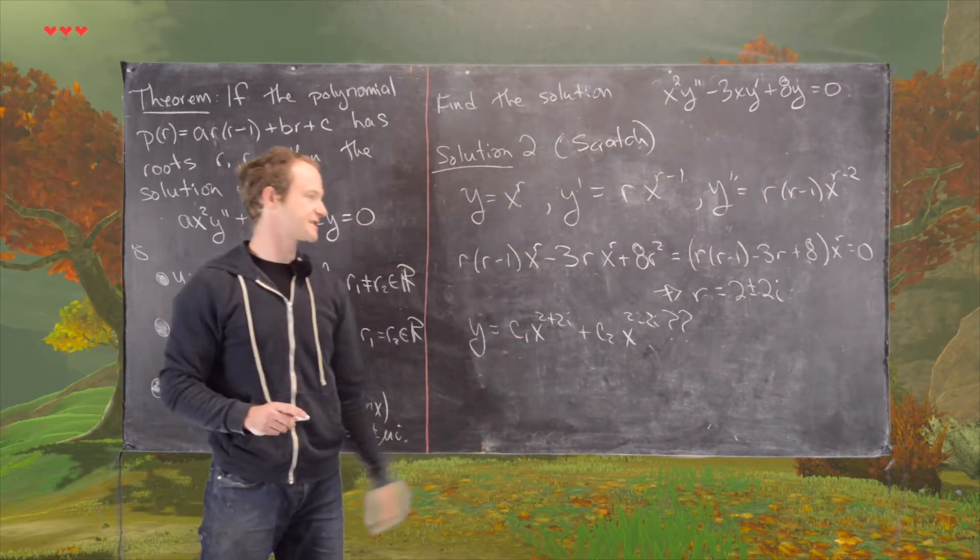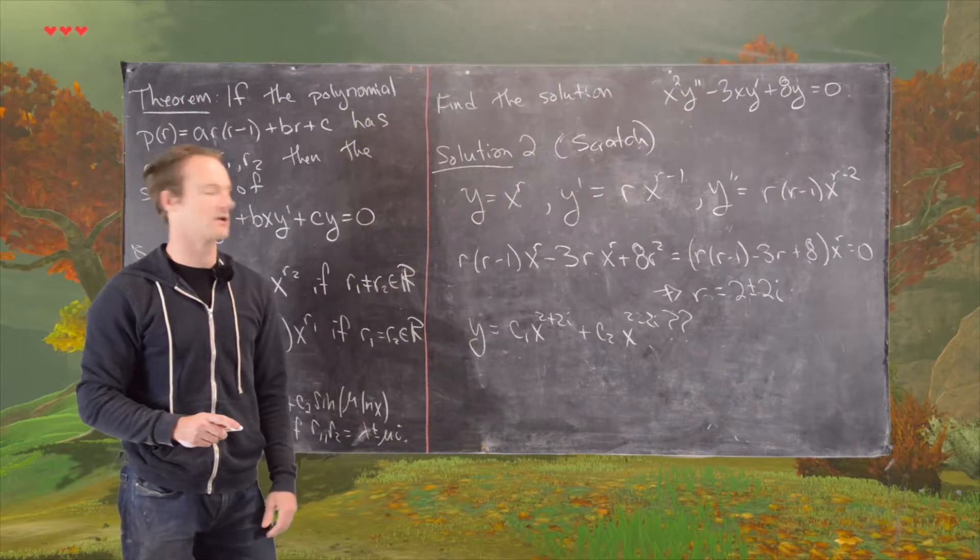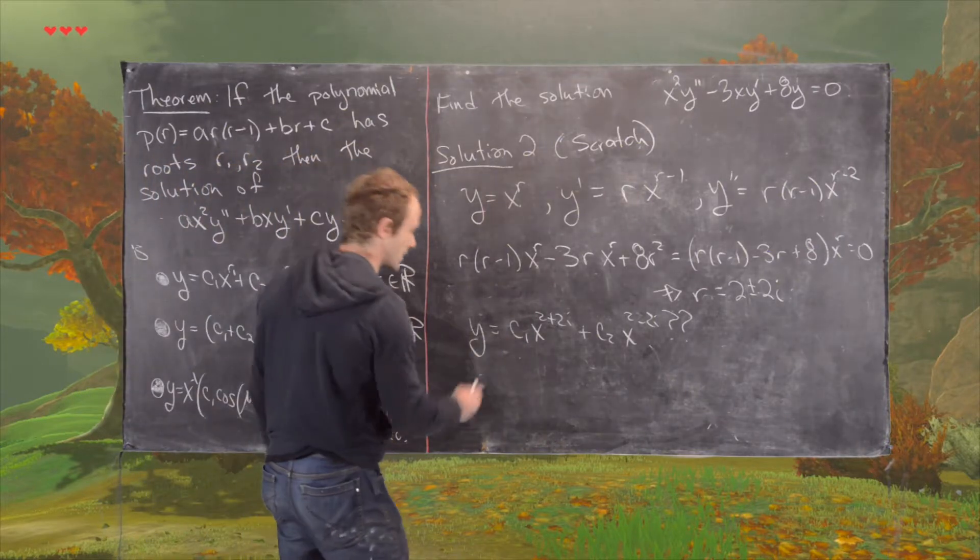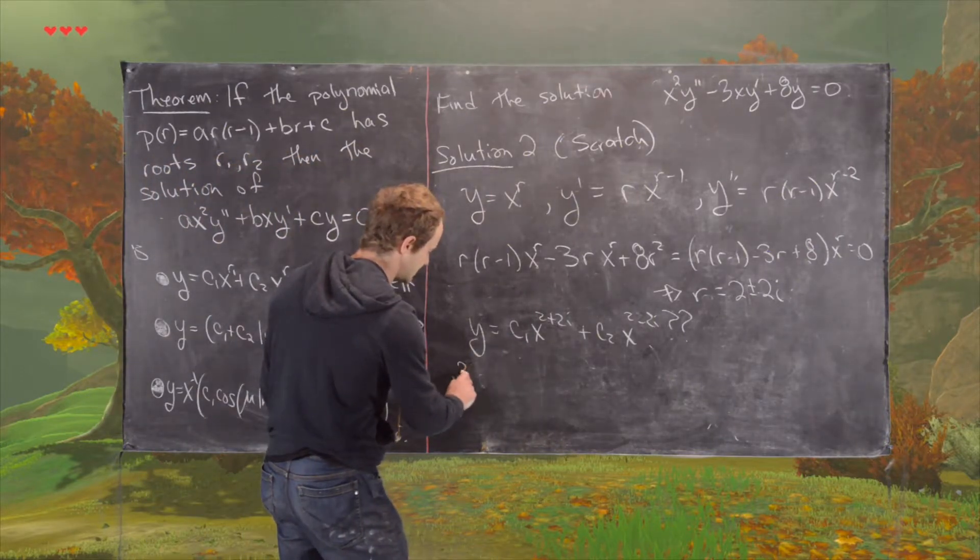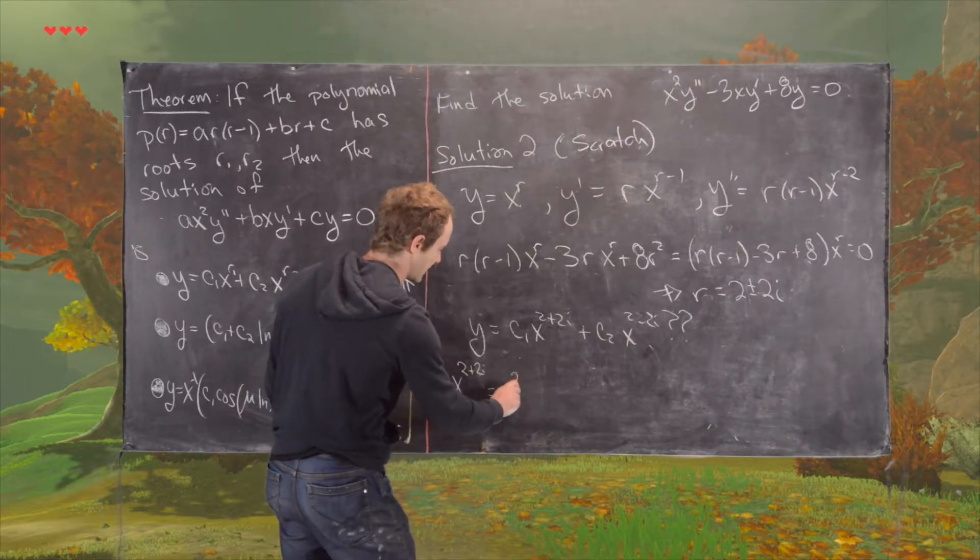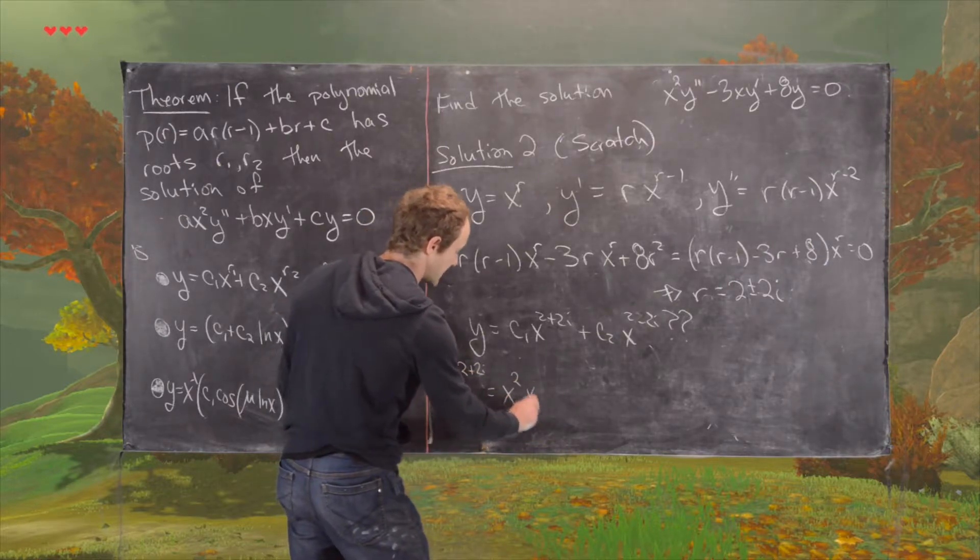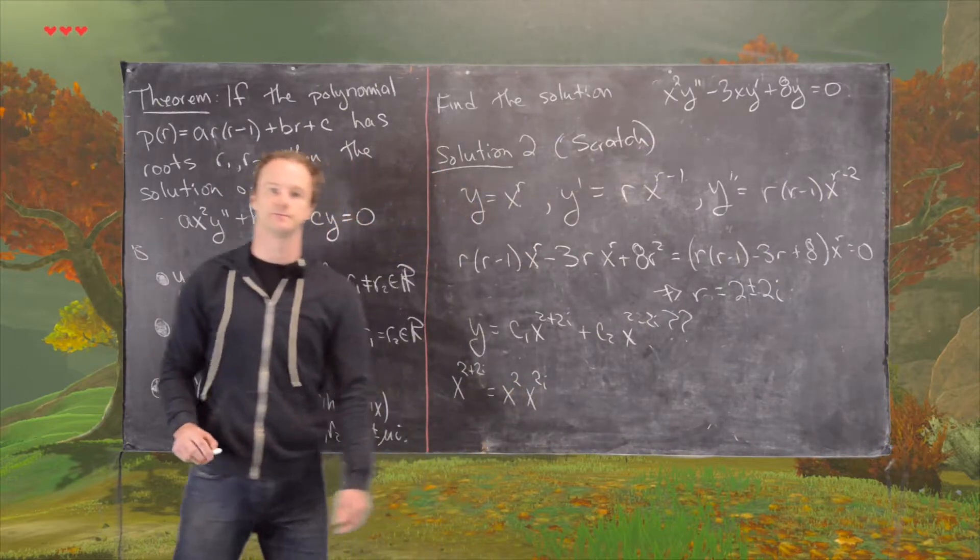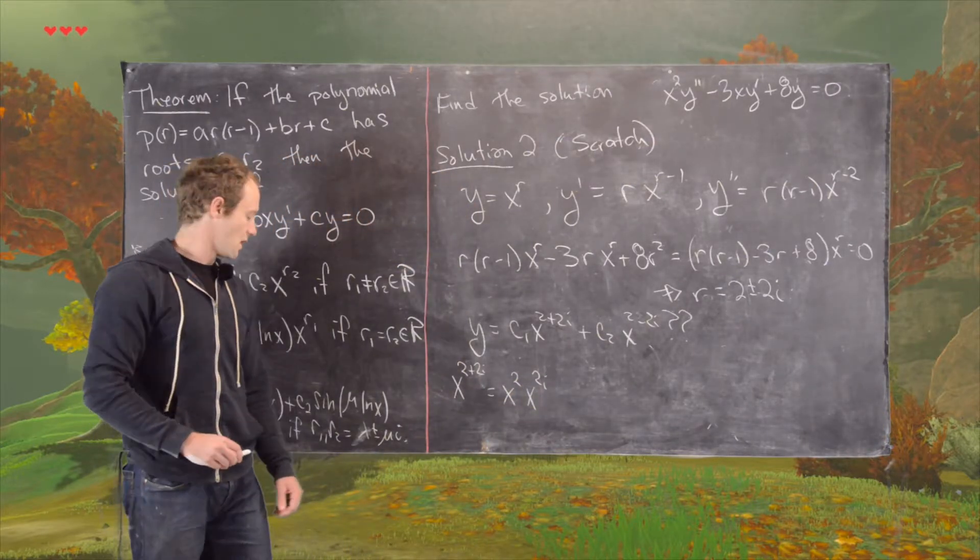So I'll focus on this first term. What we'll do here is say x to the 2 plus 2i is given equivalently by x squared times x to the 2i.